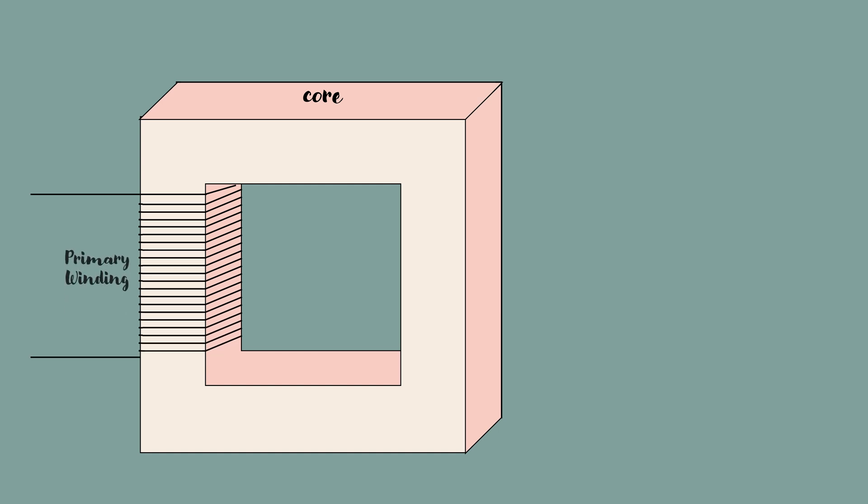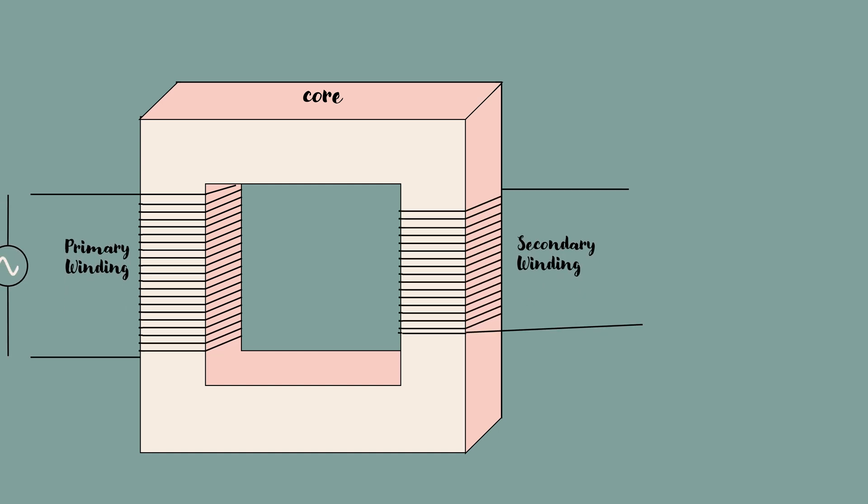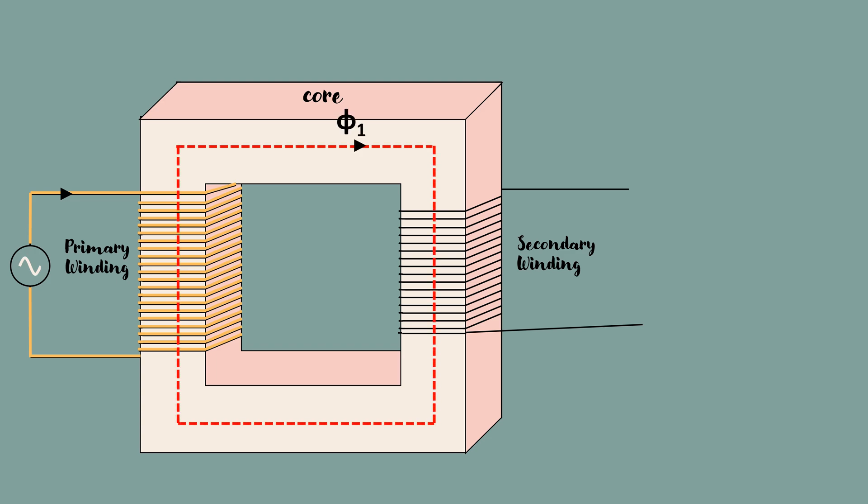Transformer has a core made of ferromagnetic material with high permeability. When an AC supply is connected to the primary winding, an AC current flows through the primary. This alternating current produces a varying magnetic flux in the transformer core. The magnetic flux is nothing but the measurement of total magnetic field which passes through the given area.